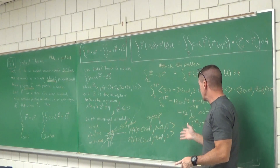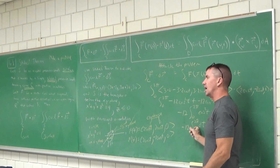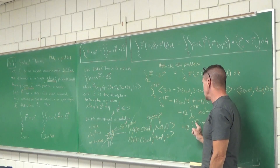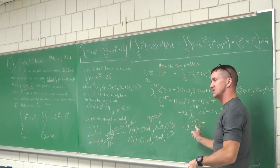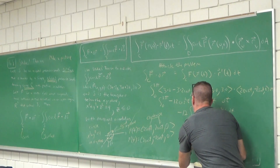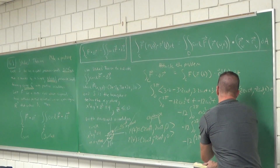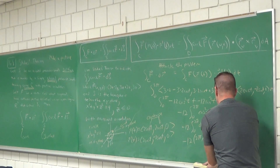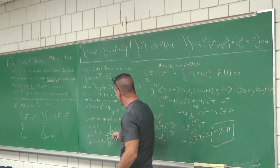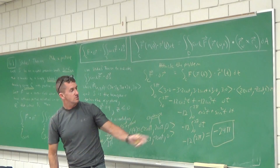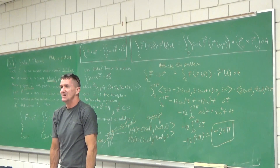Be careful — the worst part is doing all this great work and messing up the end. The integral from 0 to 2π of −12 dt is just −12 times 2π. Final answer: −24π. We had a lot of negative answers today. You could say that's the work done by a particle moving around that path, or you just found the flux of the curl of the vector field — two ways to look at that.